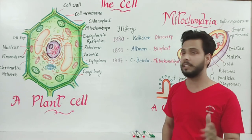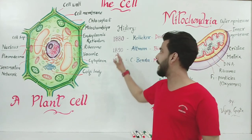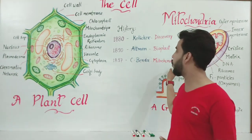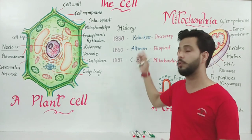So there are total three scientists: 1880 Koliker discovered the mitochondria, 1890 Altman gave the name Bioplast, and finally C. Bender gave the name mitochondria in 1897. It was the history of mitochondria.